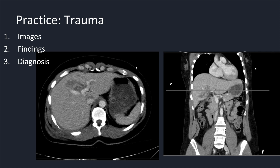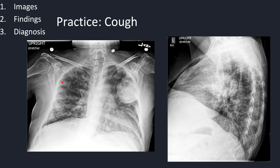This is a trauma case. An axial and coronal image of a CT abdomen with contrast shows an ill-defined hypodensity in the region of the porta hepatis. This is a liver laceration. And finally, a PA and lateral chest radiograph shows a mass-like opacity in the left upper lobe. This turned out to be a polymicrobial abscess.